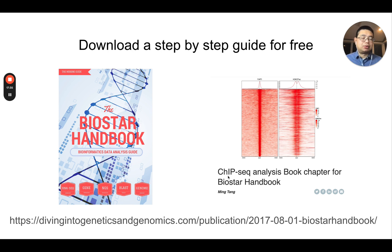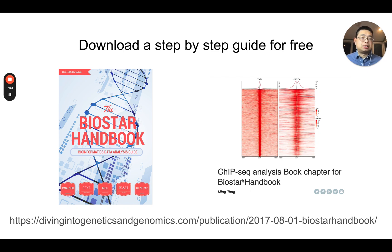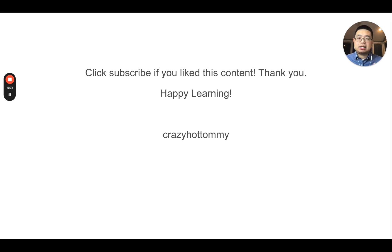I promised I'd share a PDF file. I wrote a ChIP sequencing chapter for the Biostar Handbook back in 2017. In that chapter, I show you how to download data from GEO, starting from raw FASTQ files, how to align them using Bowtie to the genome, how to call peaks using MACS2, how to visualize them in IGV, how to do motif analysis, and how to make heatmaps using EnrichedHeatmap. Go to this link and grab it — I'll have the link for this presentation in the video description. I think that's it for today. Subscribe if you like this content, and thank you. Happy learning and see you next time.